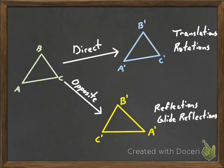What we need to remember is direct isometries are translations and rotations, and opposite isometries are glide reflections and reflections. And we'll talk a little bit about glide reflections.